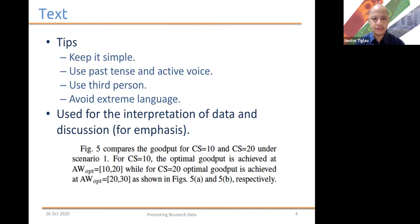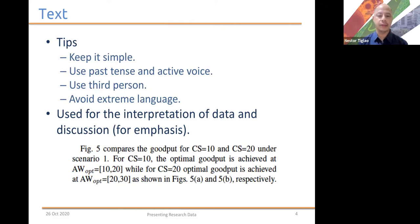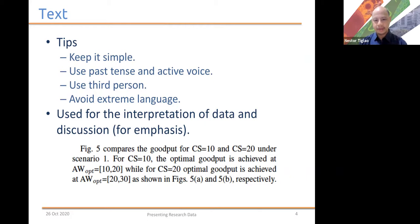In general, text is used for the interpretation of the data, because that's the main mode of explaining your research. It's also used for detailed discussion and especially when you want to emphasize a point or a research output. Here's an example that explains a particular figure in the paper. In general, you use text when you want to emphasize one or two points of that particular data.